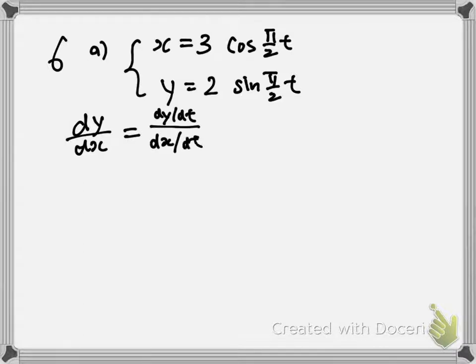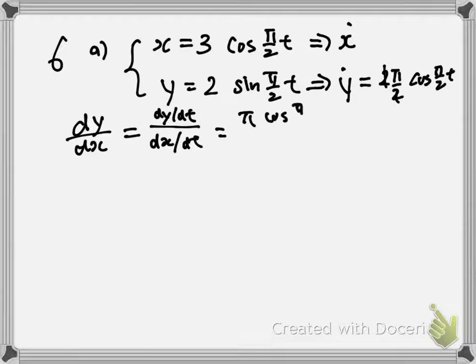So you go up here and find out what dy/dt and dx/dt is. dy/dt is 2 cosine of π/2t multiplied by the derivative of π/2. That'll be π/2. So that's π cosine of π/2t.